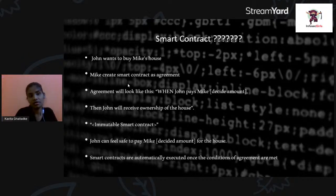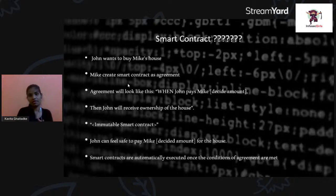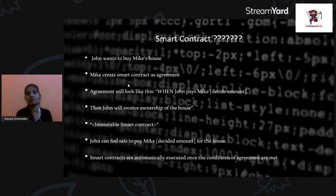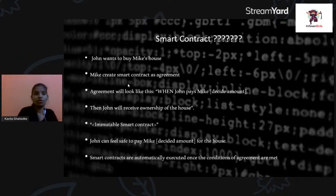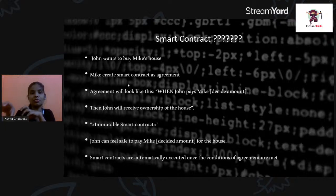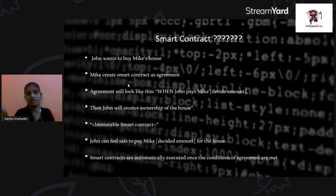Let me give an example. John wants to buy Mike's house. They will decide on a price — if John pays that amount, the house will be his. Mike will then create a smart contract as an agreement. The central point of that agreement is: when John pays a specific amount to Mike, the house will be owned by John.